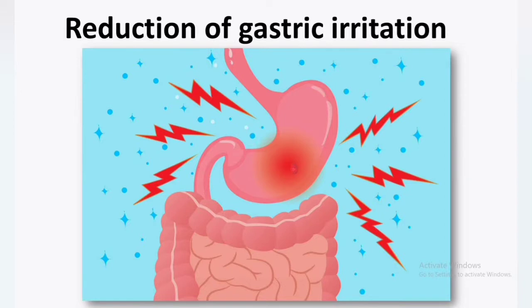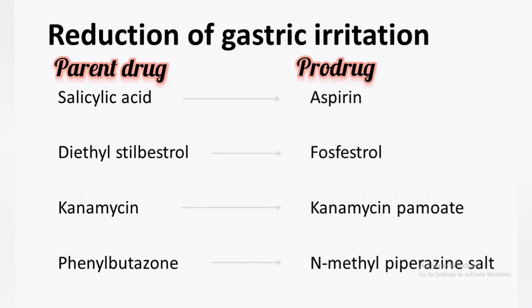Several drugs, when taken orally, cause gastric irritation. In order to get rid of this gastric irritation, drugs are converted to their Pro-drug form. For example, Aspirin is a Pro-drug of Salicylic Acid, which is much safer than Salicylic Acid. Similarly, Phosphestrol is a Pro-drug of Diethylstilbestrol. Kanamycin pamoate is a Pro-drug of Kanamycin, which is an active antibiotic. And N-methylpiperazine salt is a Pro-drug of Phenylbutazone.